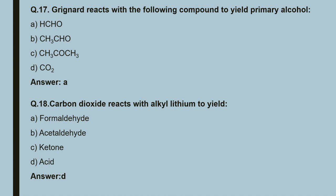Question 17: Grignard reacts with the following compounds to yield primary alcohols. Grignard reagent reacts with formaldehyde (HCHO) to form primary alcohol. So the correct answer is A, that is HCHO.